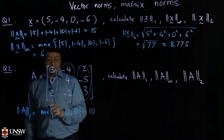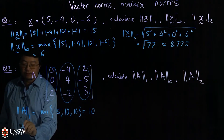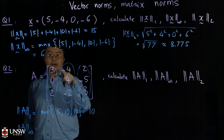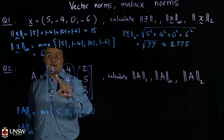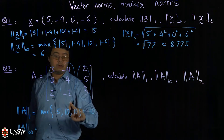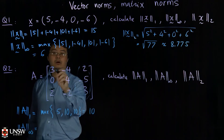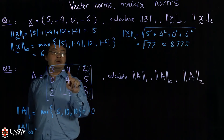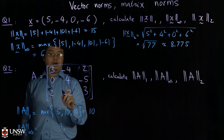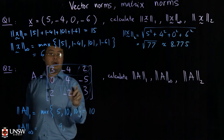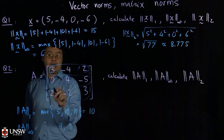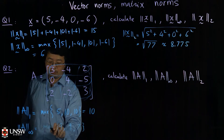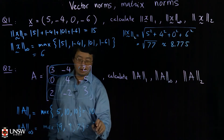For the infinity norm of the matrix, instead of taking the column sums in absolute value, you take the row sums. The first row sum is 3 + 4 + 2 = 9. The second row sum is 0 + 4 + 5 = 9. The last row sum is 2 + 2 + 3 = 7. Then taking the max of those three numbers gives 9.